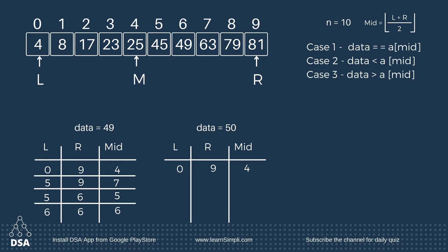The middle value is 25, and 50 is greater than 25, so the data must be in the right subarray. As the array is sorted, the greater value will be to the right of mid. Now the left variable becomes mid plus 1, that is 5, and the right variable remains the same. So the mid value will be 7.